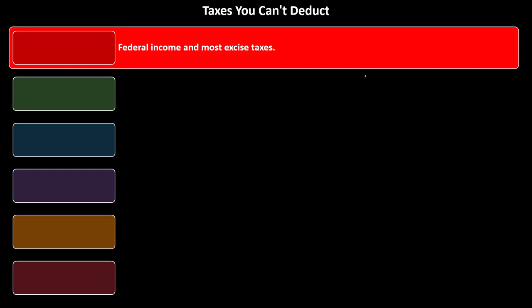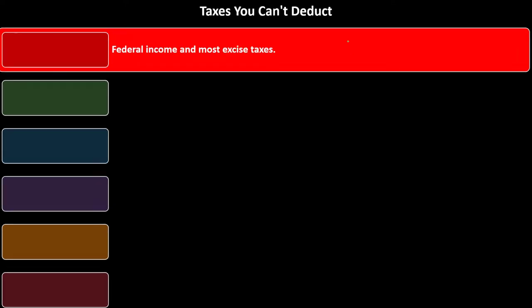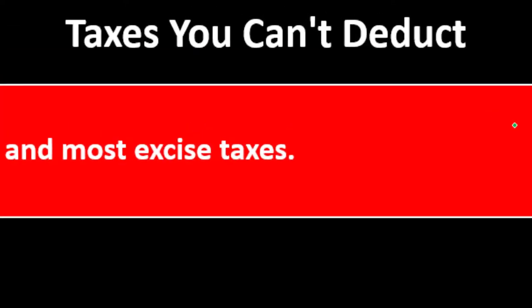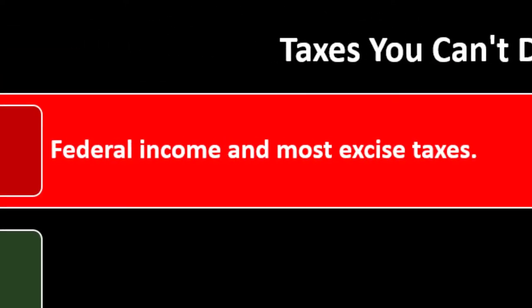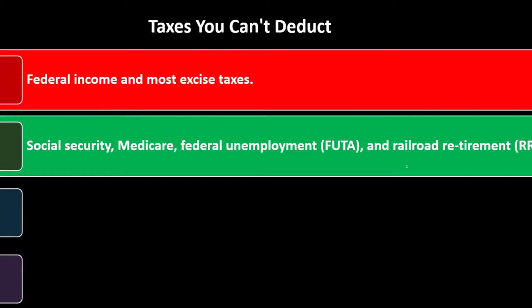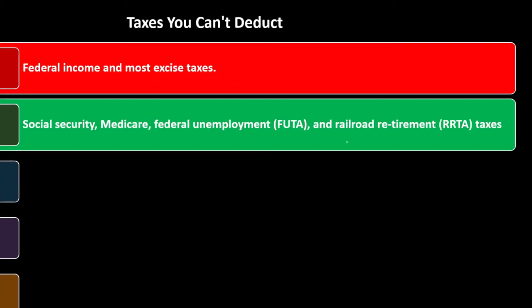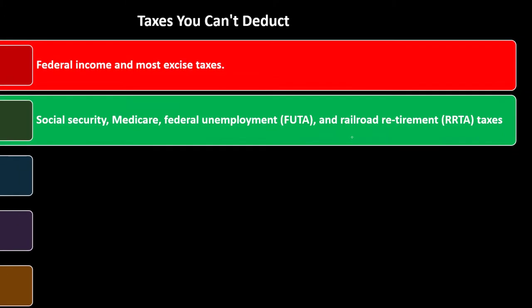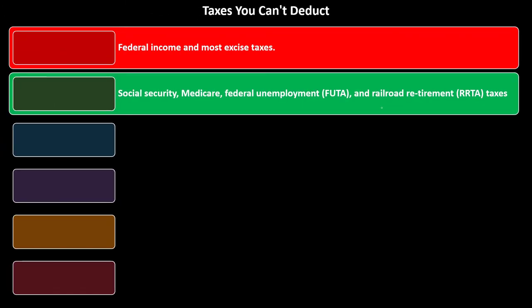The general rule: federal income taxes and most excise taxes can't be deducted. Clearly, you can't deduct the federal income tax when calculating federal taxes — that's the circular reference problem. Social Security, Medicare, federal unemployment tax, and railroad retirement (RRTA) are also not deductible. These are the payroll-type taxes. They are federal taxes, but they're not federal income taxes.